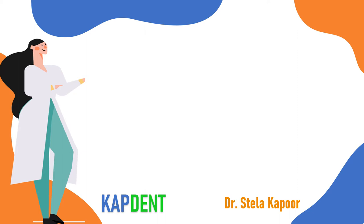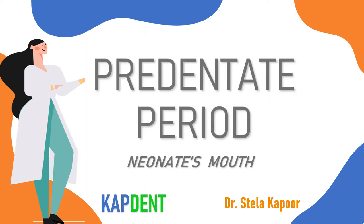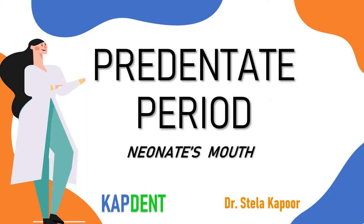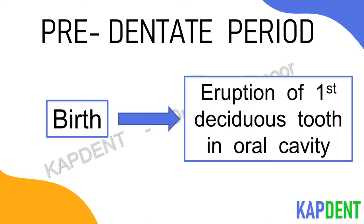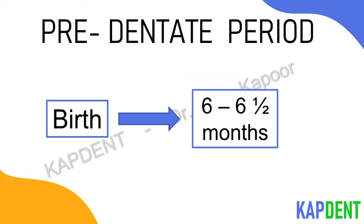In this video I will discuss about the pre-dentate period or the neonate's mouth. This period refers to the time between birth and eruption of the first deciduous tooth in the oral cavity, which usually takes place around six to six and a half months of age.